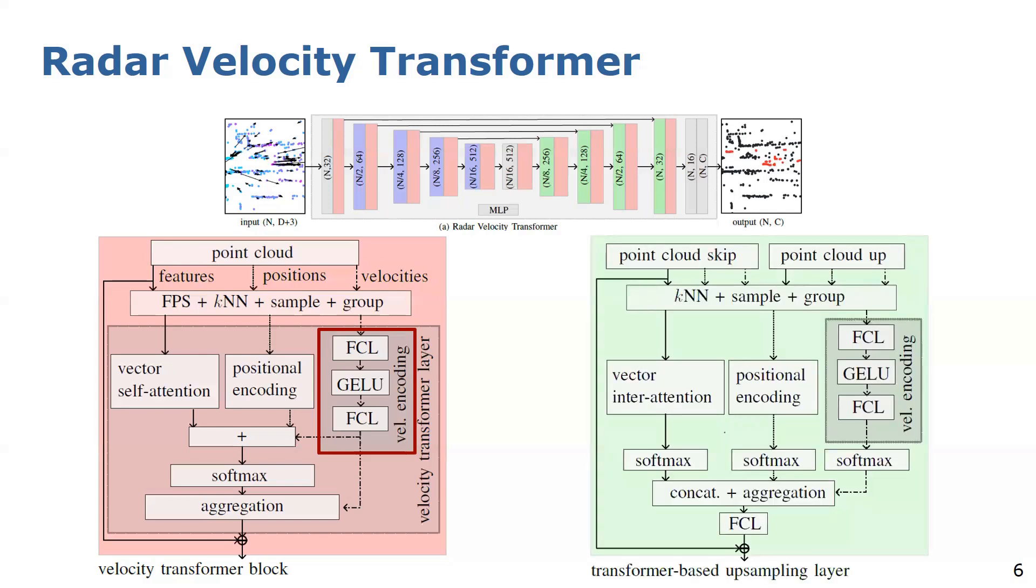Furthermore, we introduce a transformer-based upsampling module to adaptively combine local context information. The common upsampling method is trilinear interpolation based on an inverse distance weighted average which can result in the combination of features of different classes which harms the extraction of discriminative features especially at the boundaries of moving objects. Hence, the adaptive combination of the features which are passed through the skip connection and the features which have to be upsampled is crucial to enhance the accuracy. To combine the features we adopt the transformer layer and extend it to perform intra-attention of the two point clouds. The module also includes velocity encoding as explained before. Furthermore, we determined individual attention weights by the softmax functions to enable fine-grained information aggregation and support reliable moving object segmentation.